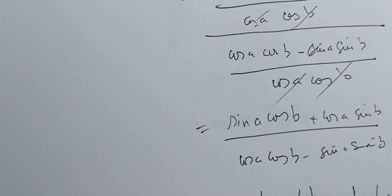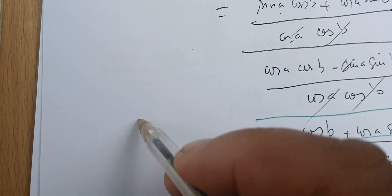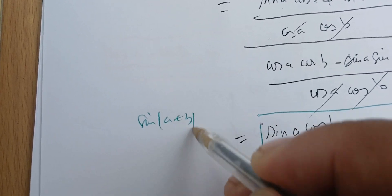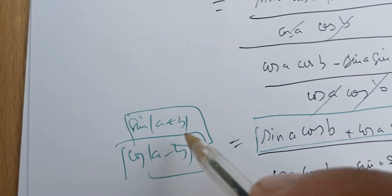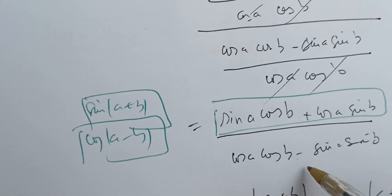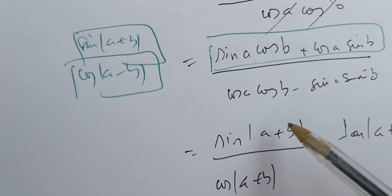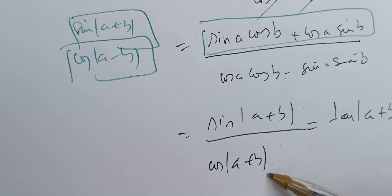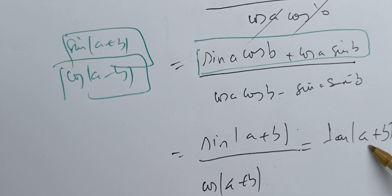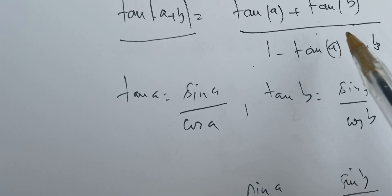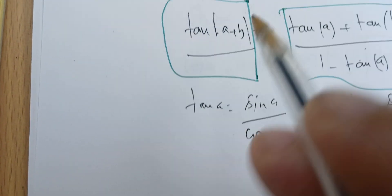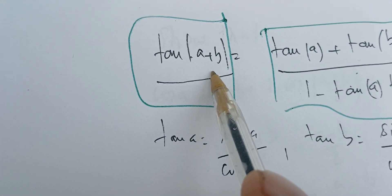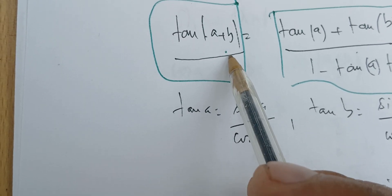The key idea is to note that the numerator is sine of a plus b and the denominator is cosine of a plus b. Using those formulas, we arrive at sine of a plus b over cosine of a plus b, which is just the tangent of a plus b. Therefore this formula is proven.